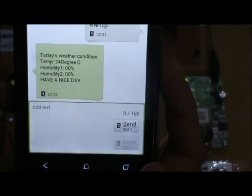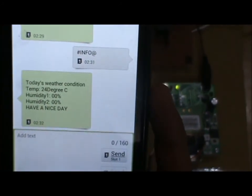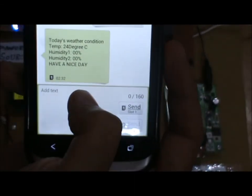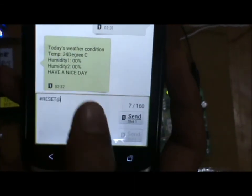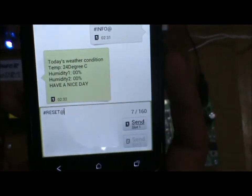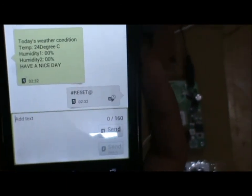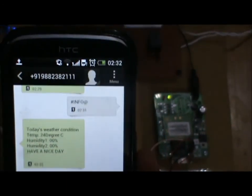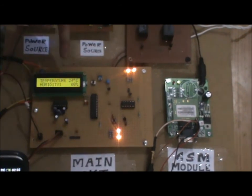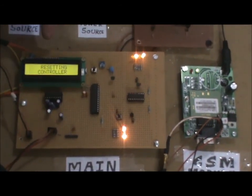We can also switch our circuit back to the automatic mode by sending the command reset. As the reset command is sent, we can see that our controller is resetting.